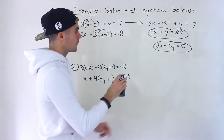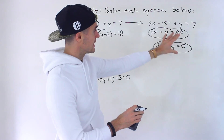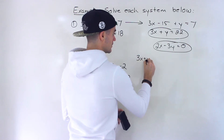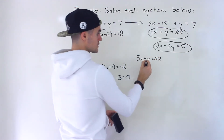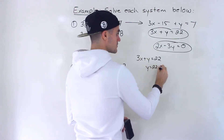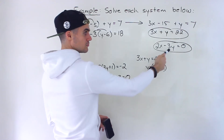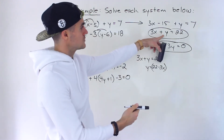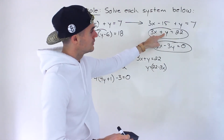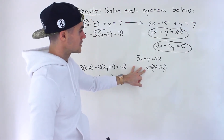Notice that we have a y by itself, so I'm going to work with that — isolate for it and then take that expression and plug it in for y in the other equation. I'm going to isolate for this y and bring the 3x over. You don't necessarily have to isolate for this y — you could isolate for x — but then you'd be working with fractions. Whenever I see something already by itself, I isolate for that to avoid fractions.